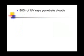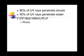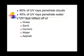90% of UVA and UVB rays can penetrate through clouds and fog, so even if it is not sunny out, you are still susceptible to sunburns and skin damage. 40% of UV rays penetrate water. UV rays are reflected off of grass, sand, cement, water, and asphalt, and many other surfaces, intensifying the amount of UV rays pointed at us at any given moment.